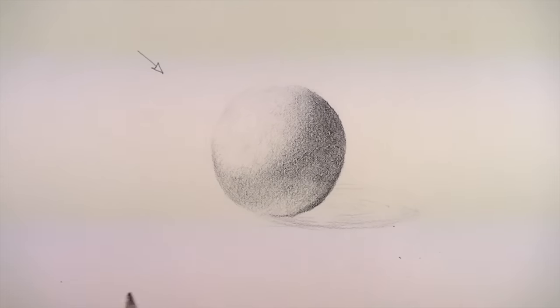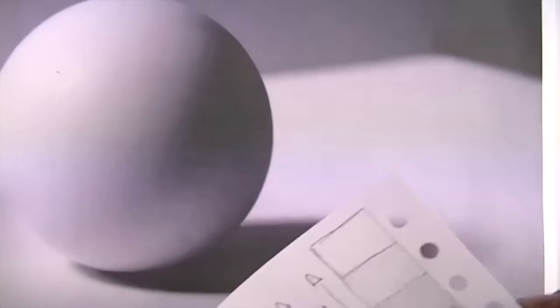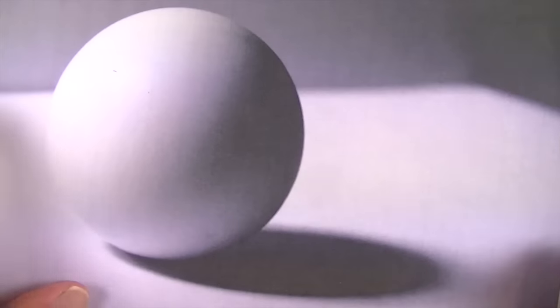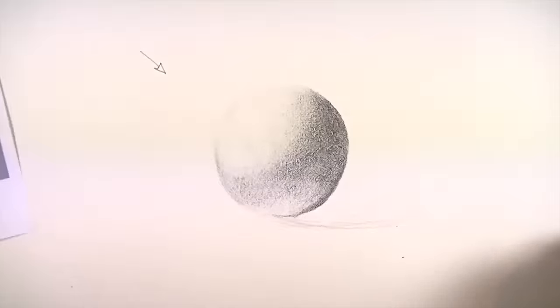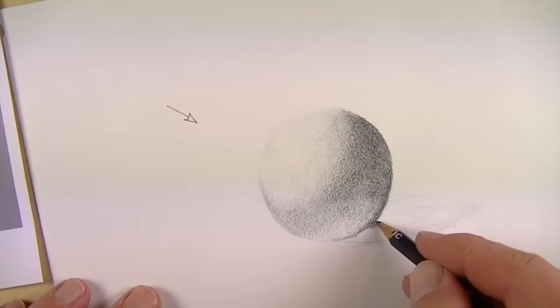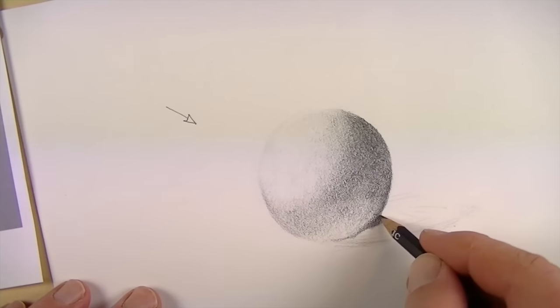All right, now in the area of cast shadow, a lot of times that's the darkest area, and sometimes it's the second darkest. Sometimes the area of core shadow is actually the darkest, but in this case, we know that this area is the darkest. So just to save time, I'm going to go ahead and continue with the 4B pencil.